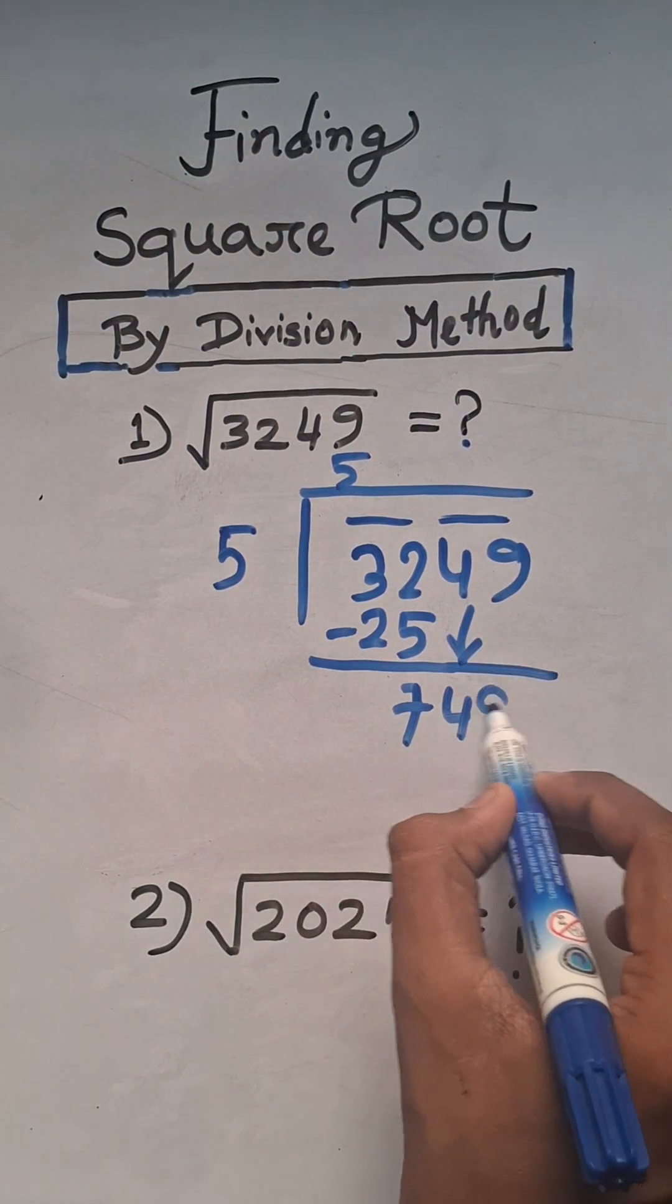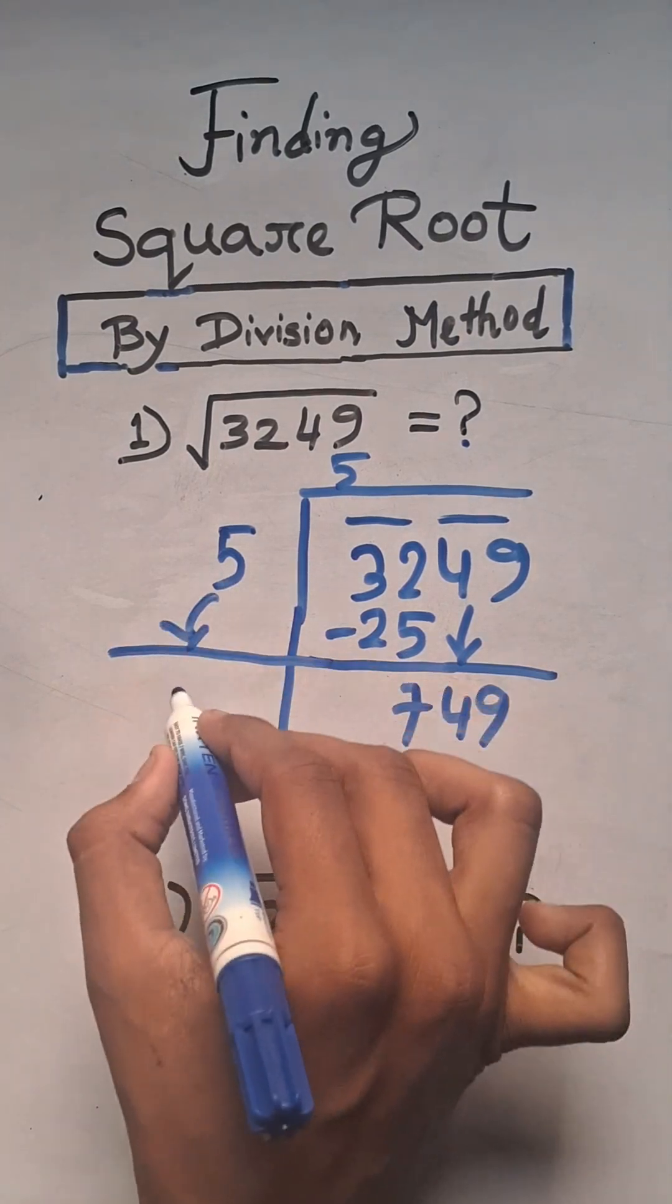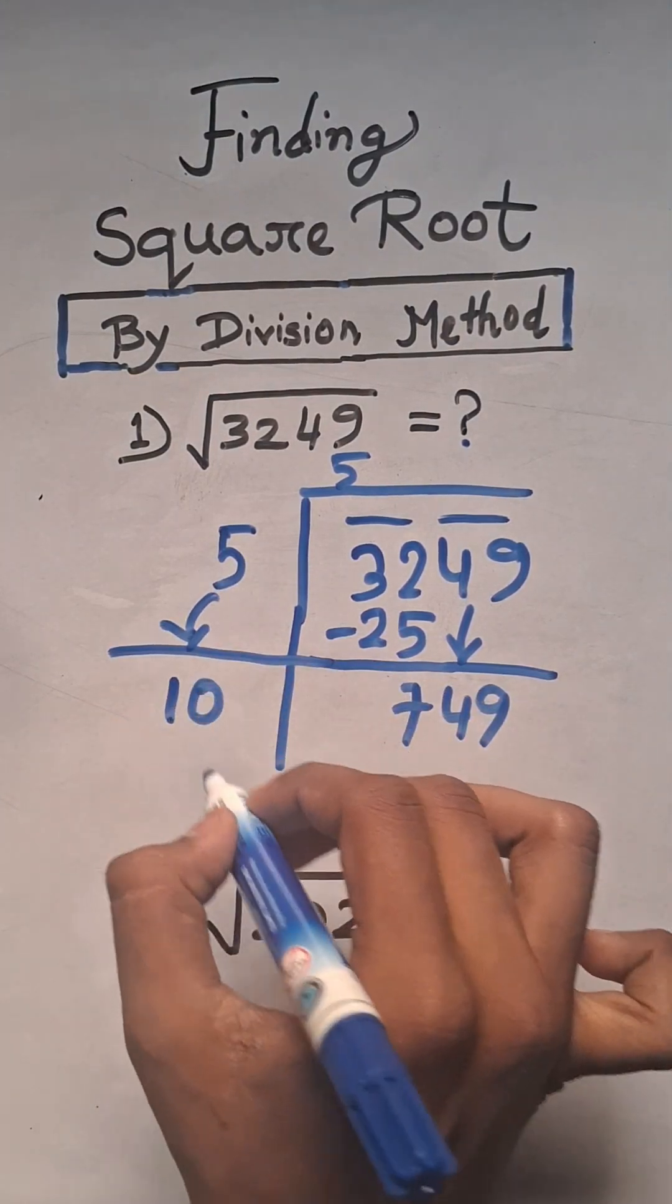And then we write the next pair which is 49. Now it is the main thing: just double the number. 5 times 2 equals 10. Now here we have to